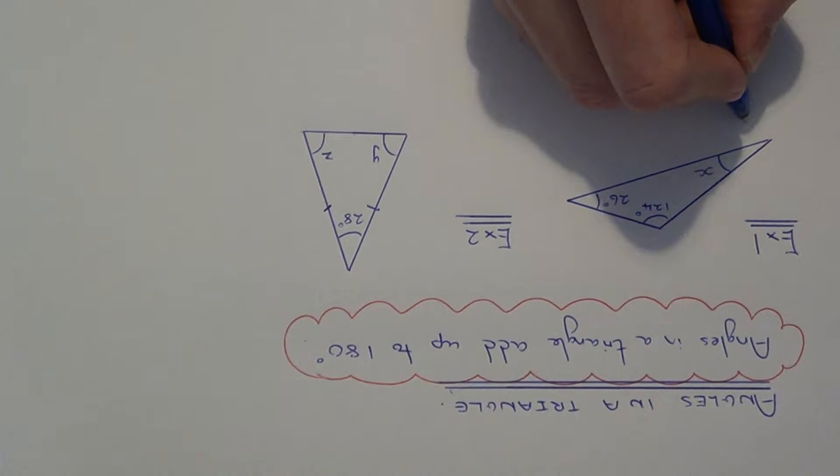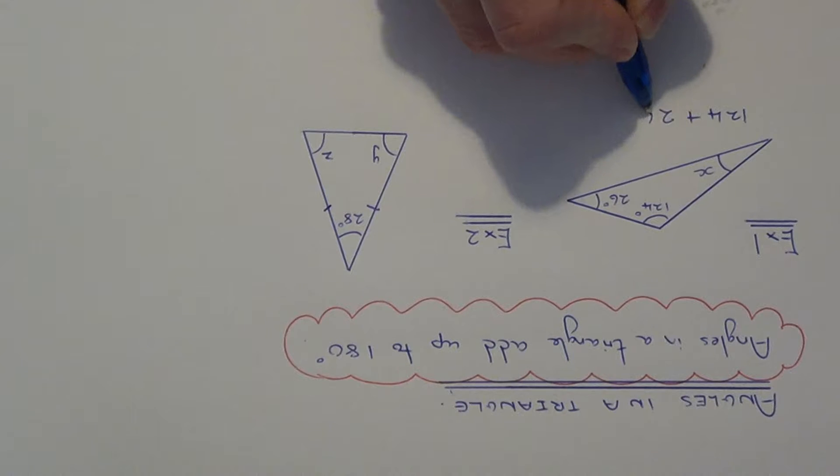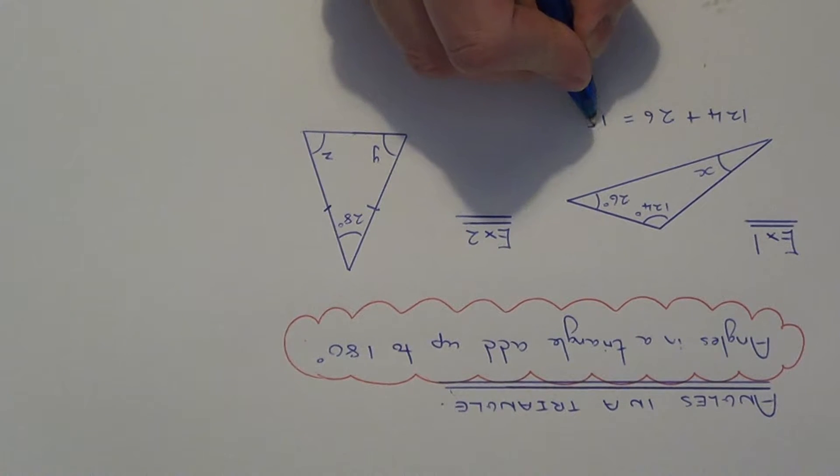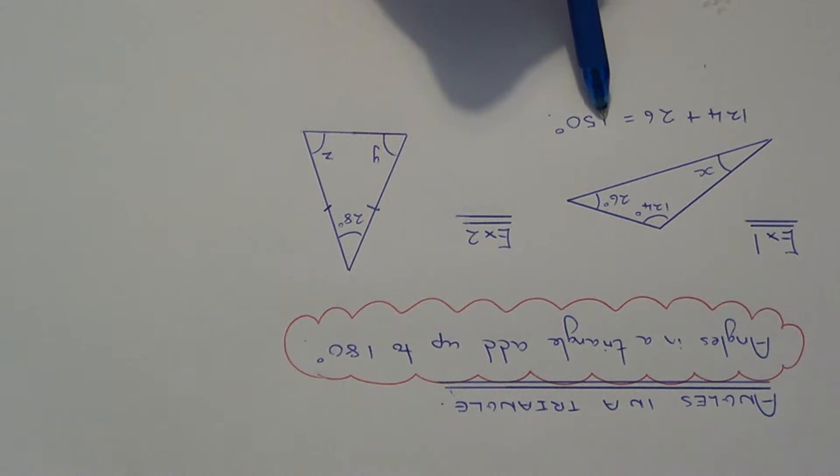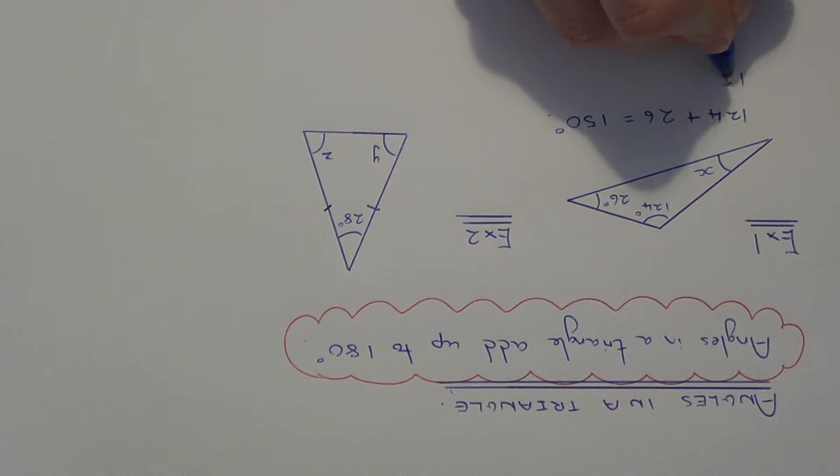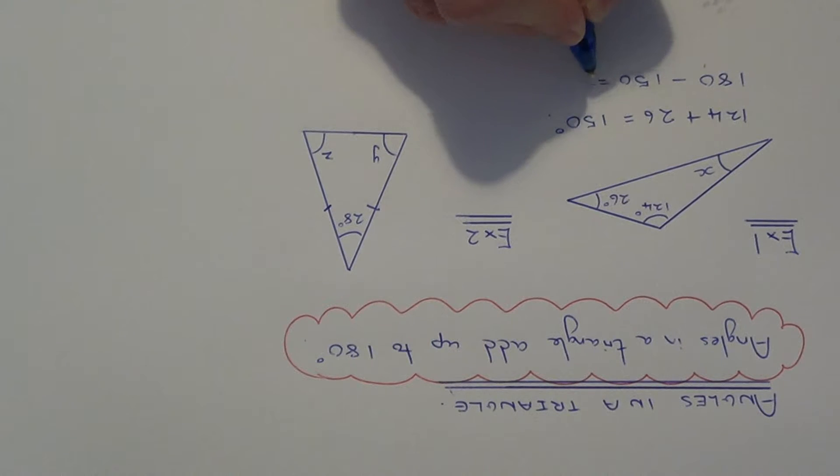If we add these two angles up, 124 add 26, that will give me 150 degrees. All we need to do now is subtract this answer from 180 degrees and that will be the size of angle X. So X is equal to 30 degrees.